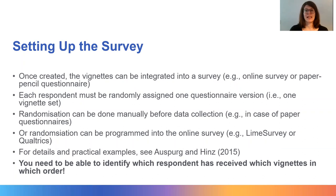Once you have completed all of the previous steps, your vignette experiment is ready for data collection. This step involves integrating your vignettes in a standard survey, such as an online survey or paper-pencil questionnaire. The survey must be set up such that each respondent is randomly assigned one questionnaire version — one vignette set with a random order of vignettes within the set. Randomization can be done manually before data collection, or programmed into the online survey using tools such as LimeSurvey. It is imperative that you are able to identify which respondent has received which vignettes in which order.